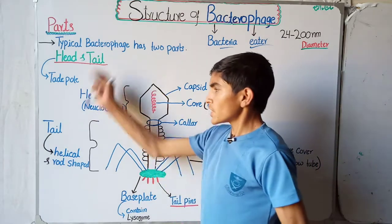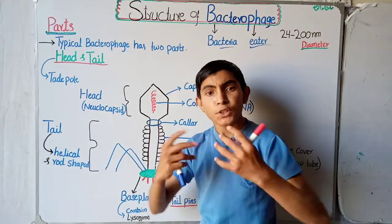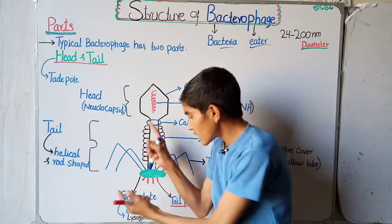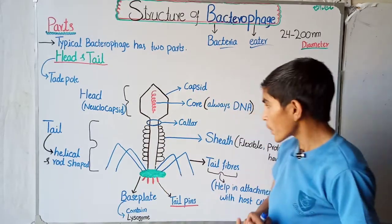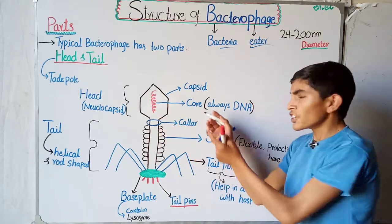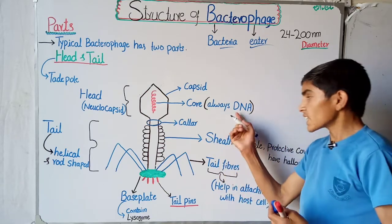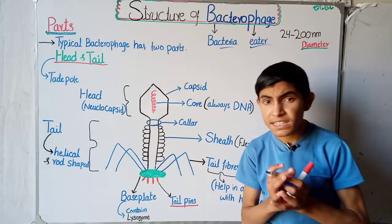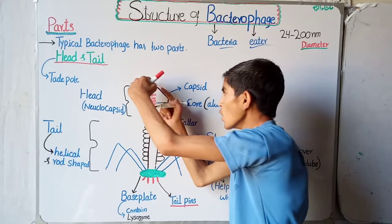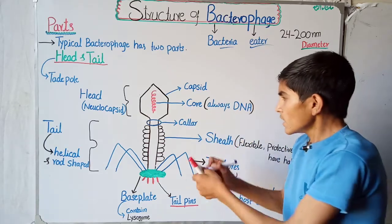So the bacteriophage consists of two parts: the head part and the tail part. The head consists of a core, which contains the genetic material. In the case of the bacterial bacteriophage virus, it always has DNA — bacteriophages do not have RNA. So the core contains DNA as the genetic material.